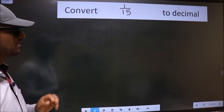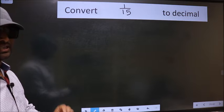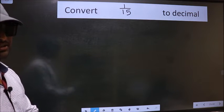Convert 1 by 15 to decimal. To convert to decimal, we should divide it. And to divide, we should frame it in this way.